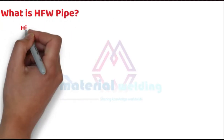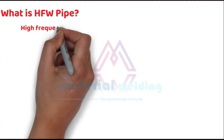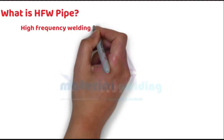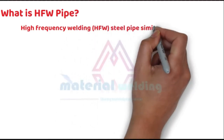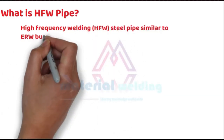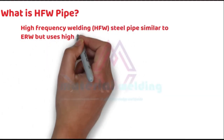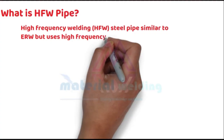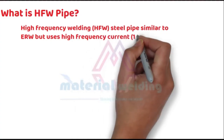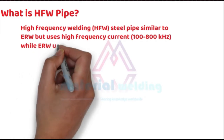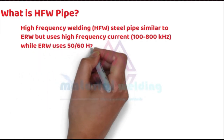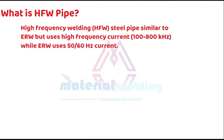Next is HFW pipe. HFW means high frequency welding. They are similar to ERW but welded using a high frequency current, thus providing improved quality compared to ERW pipes.